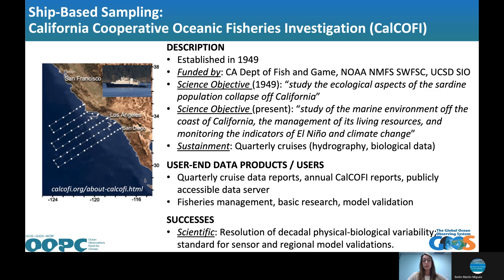The data products produced include data reports — both quarterly and annually — as well as publicly accessible data on their server. Users are predominantly fisheries management, but the data is also used for basic research and model validation. The success of the program is that it has been able to resolve decadal-scale physical and biological variability in the Southern California Current System. These data are used as a standard for sensor and regional model validation — if someone is deploying a new sensor on an autonomous platform, it's very common to compare to historic CalCOFI data.